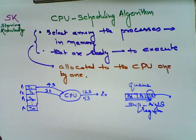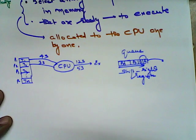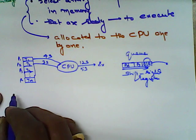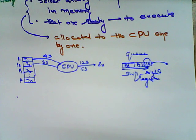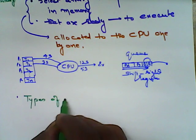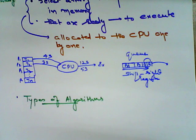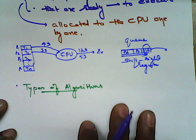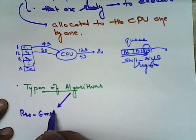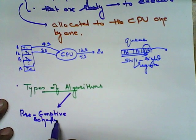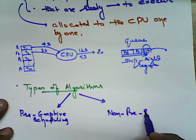Now there are two very important algorithms under CPU scheduling. There are two types of algorithms: one is termed as preemptive scheduling algorithm, and another is non-preemptive scheduling.